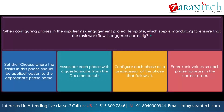Question. When configuring phases in the supplier risk engagement project template, which step is mandatory to ensure that the task workflow is triggered correctly? Option 1: Set the 'choose where the tasks in this phase should be applied' option to the appropriate phase name. Option 2: Associate each phase with a questionnaire from the Documents tab. Option 3: Configure each phase as a predecessor of the phase that follows it. Option 4: Enter rank values so each phase appears in the correct order.